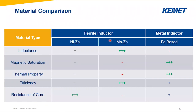Now let's make a summary. We have seen there are different materials: nickel zinc, manganese zinc, and ferrite-based metal inductors. The strength of nickel zinc is good core resistance and fair efficiency and magnetic saturation. Manganese zinc has a very high inductance value, but the core resistance is not perfect, though efficiency is. Now, metal inductors look nearly perfect — maybe the inductance value is not that ideal, but because of this we can use them for many different applications, either as a filter or as a DC-DC converter coil.